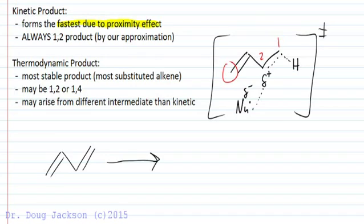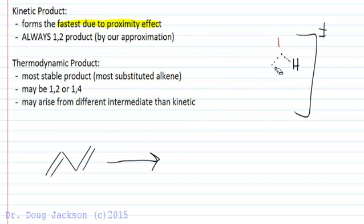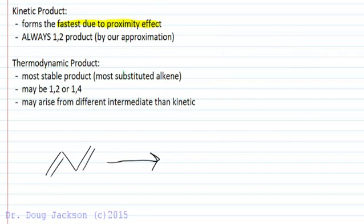The thermodynamic product, on the other hand, is going to be the most stable product regardless of whether it's a 1,2 or 1,4 addition. So the most substituted alkene will be the most stable product.